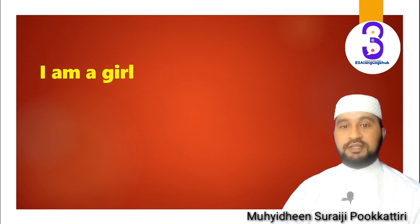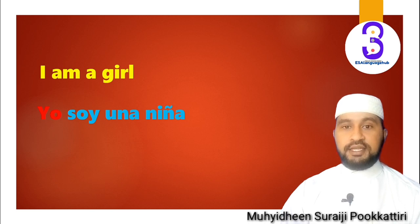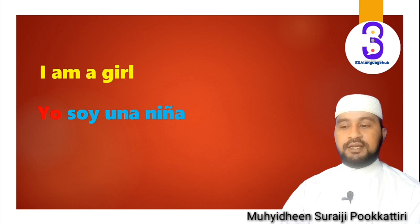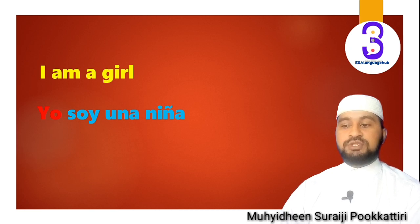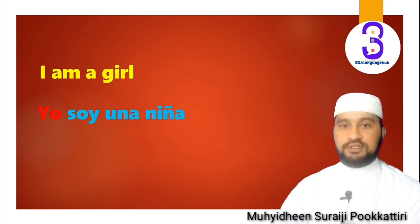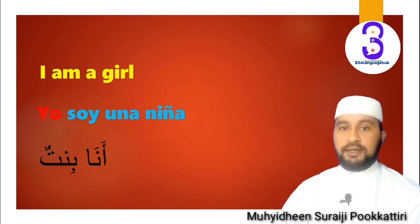If it is a girl, she should say 'I am a girl.' In Spanish: 'Soy una niña' — 'yo' can be omitted. Notice the difference from 'boy': we use 'una' instead of 'un,' and 'niña' instead of 'niño' — a tiny difference. In Arabic: 'Ana bintun' — instead of 'waladun,' we use 'bintun.'